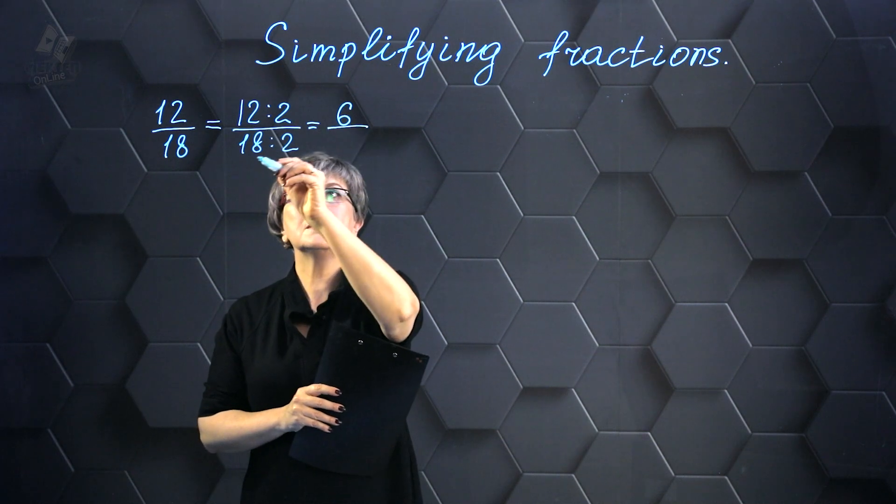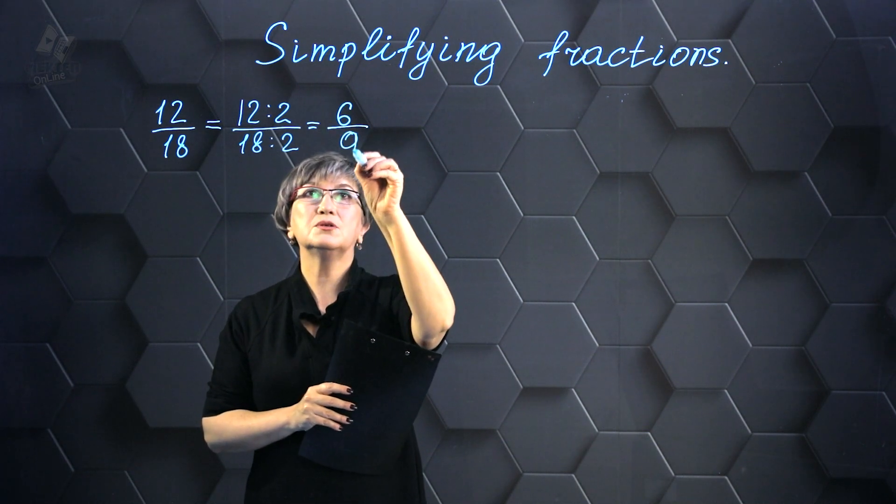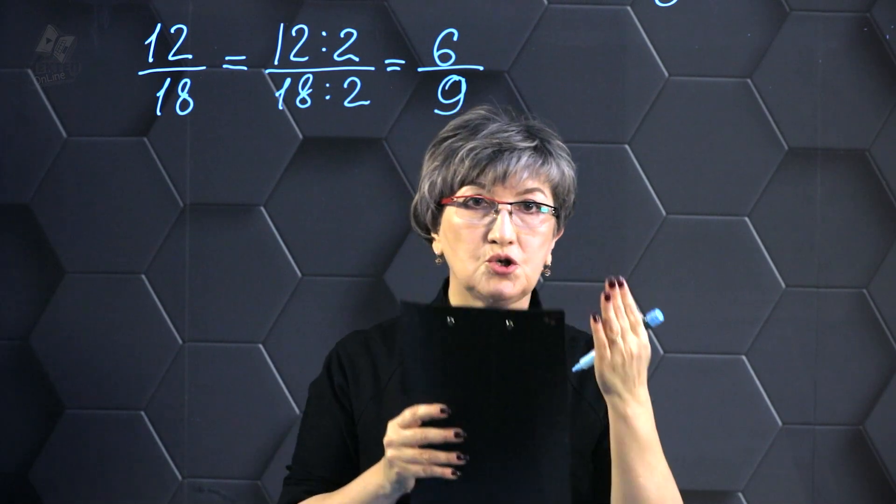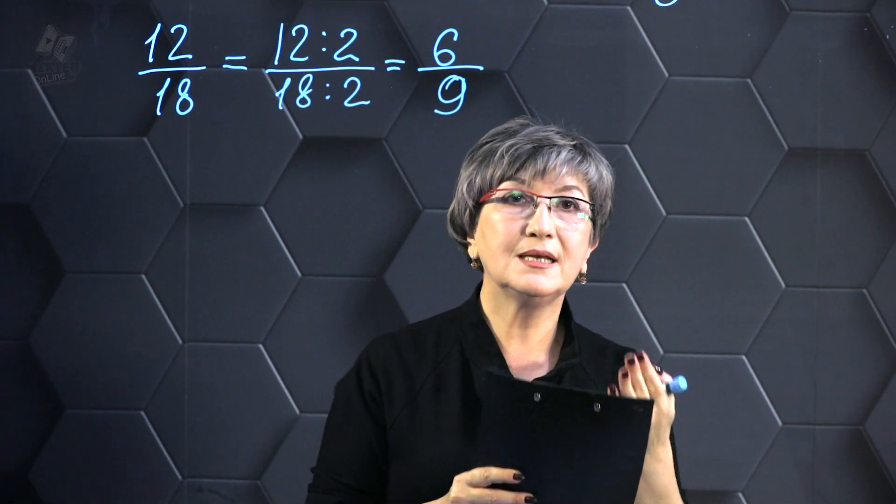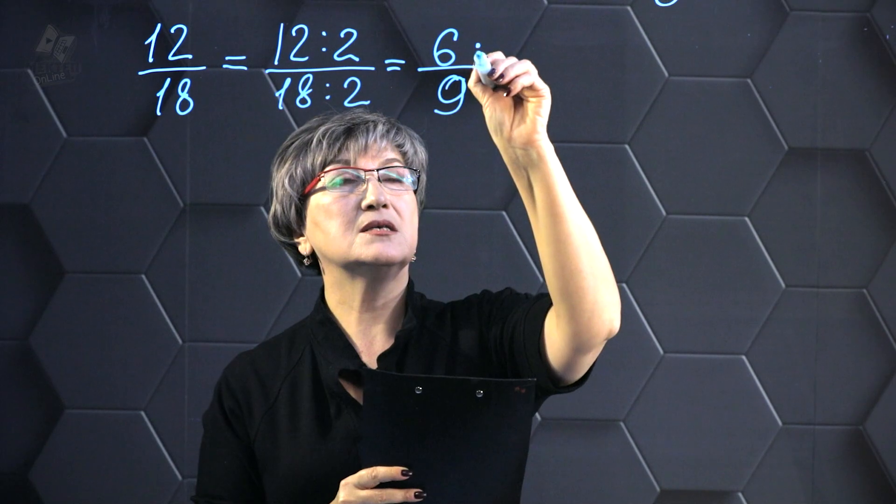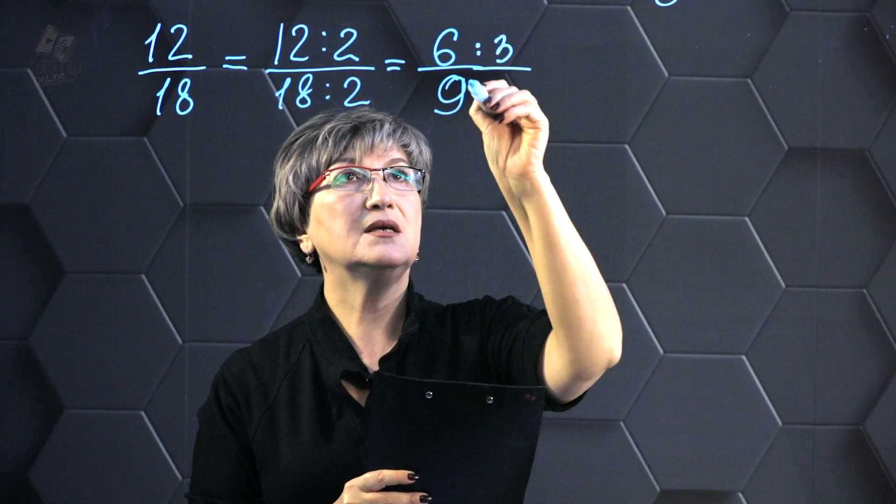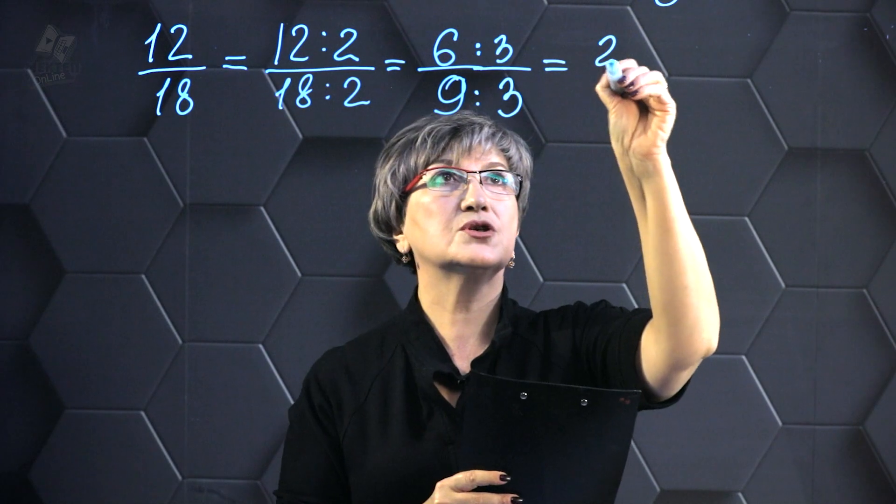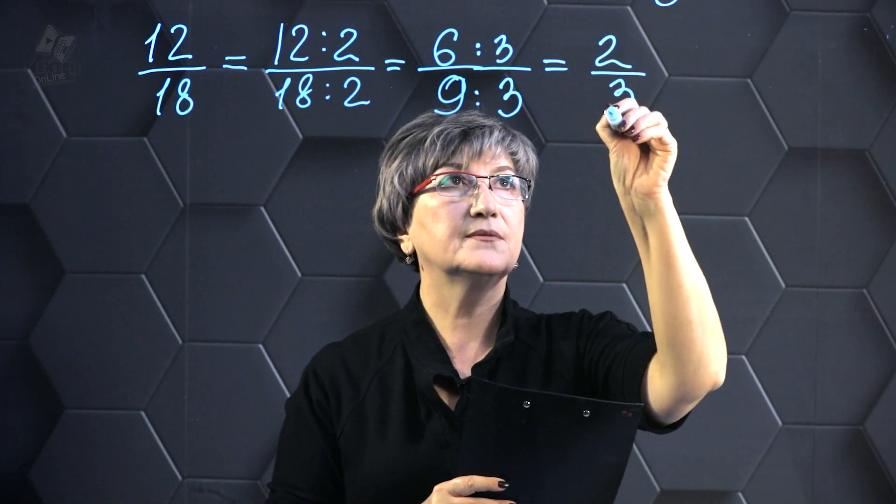The numbers 6 and 9 have an extra common factor which is 3. In other words, when I divide 6 by 3, I get this result. This shows that 6 and 9 share more than one divisor and 3 is one of those divisors they have in common. And I will also divide 9 by 3. Consequently, I obtain 2 thirds as the outcome.